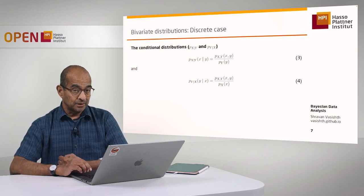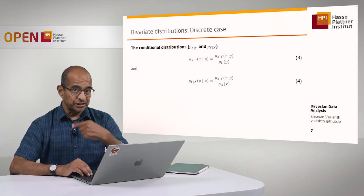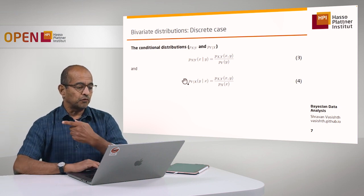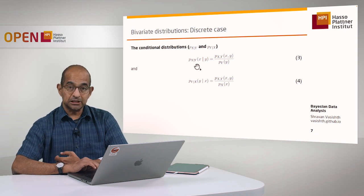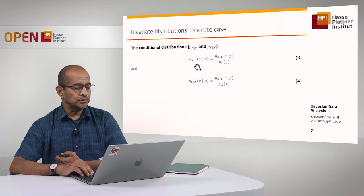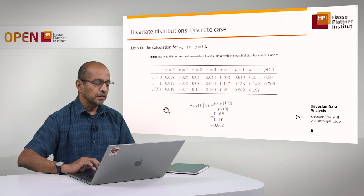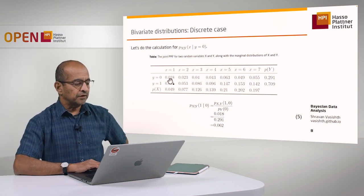So that's the definition of conditional probability we are using to compute the conditional distributions. These are probability mass functions — for particular values of one variable, for example y, I'm going to figure out the distribution of x. Here I have the table again, with the joint distribution and the marginal distributions shown.